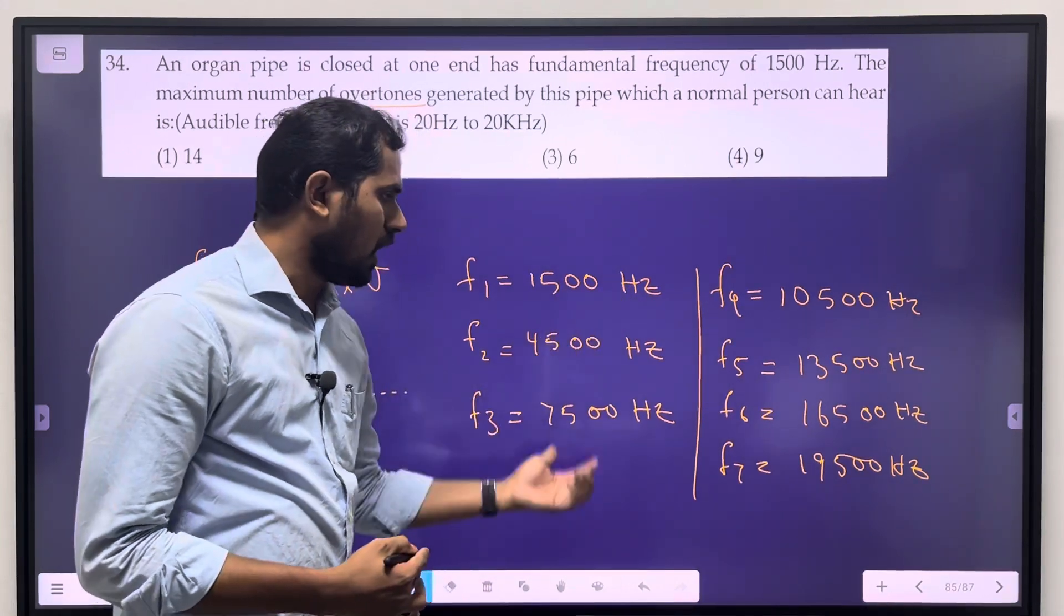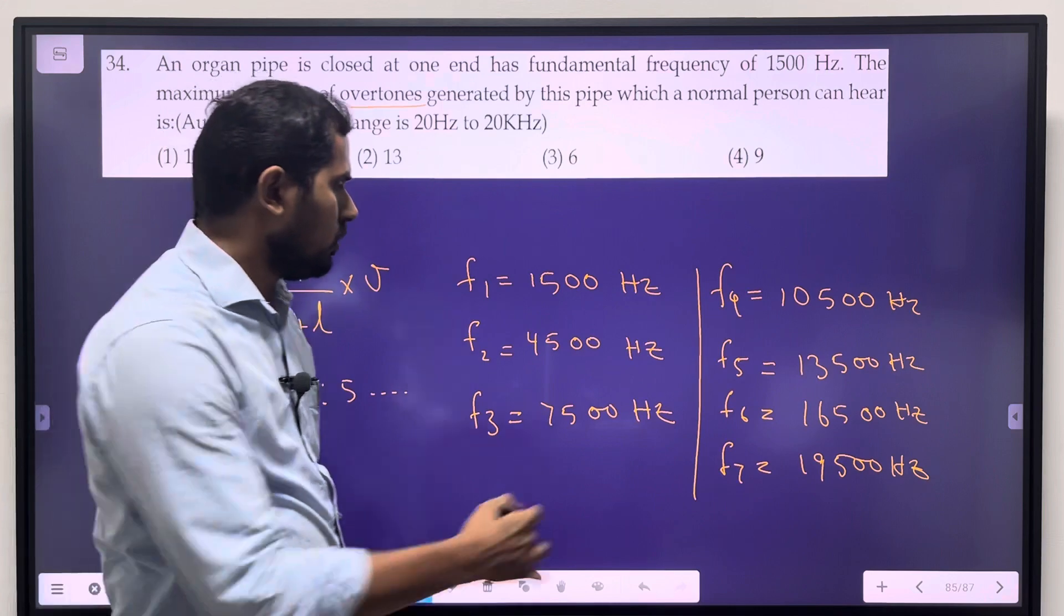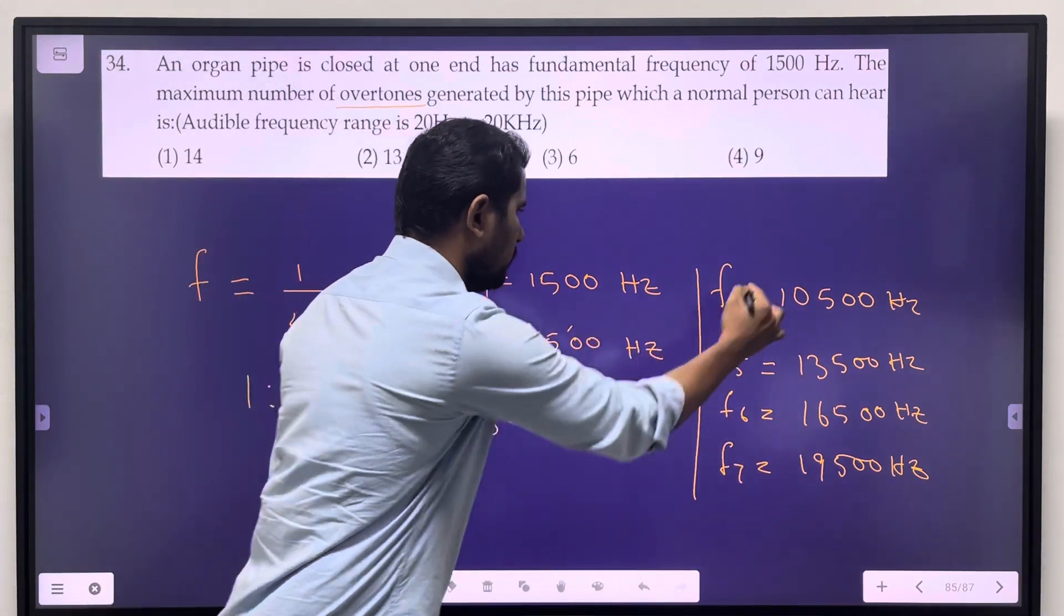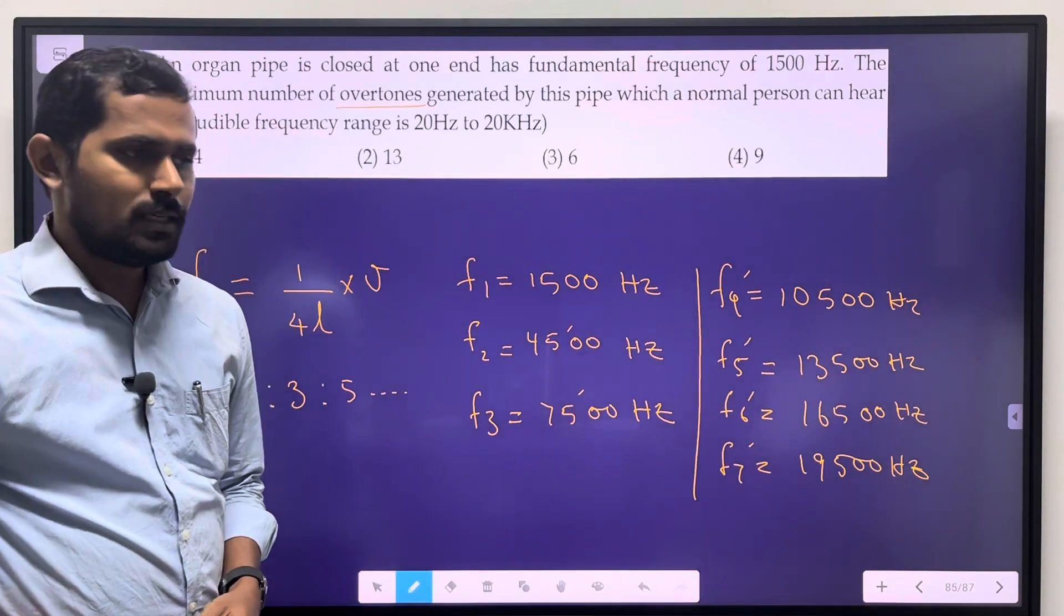First harmonic is the fundamental; we get other frequencies after that. So 1, 2, 3, 4, 5, 6 - the number of overtones is 6.